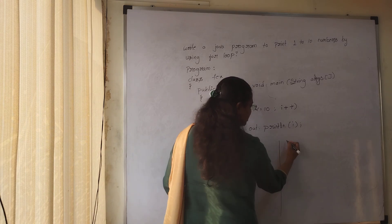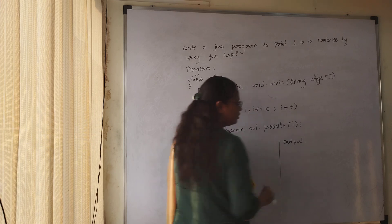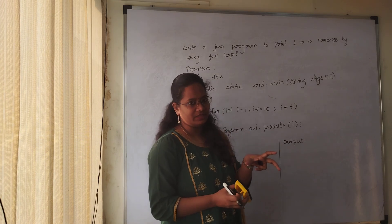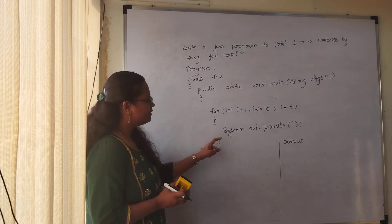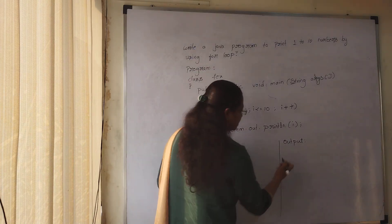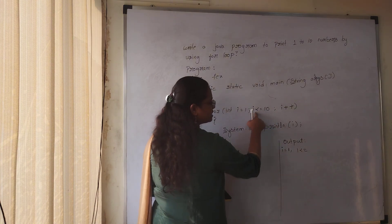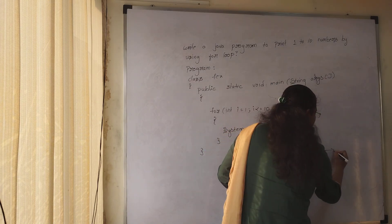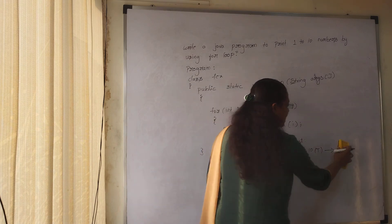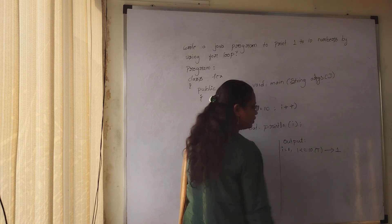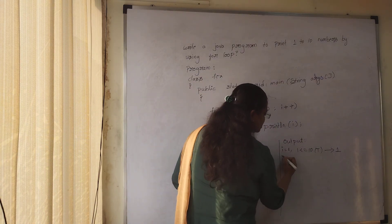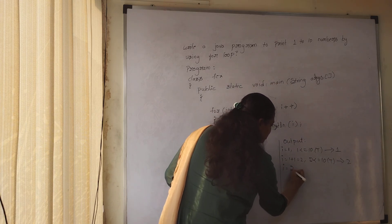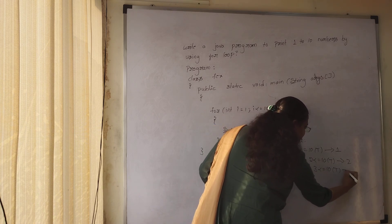Let's trace the output. In while loop, you initialize, check condition, print, then increment. Similarly here: i equals 1, condition 1 <= 10 is satisfied, so it prints 1. Then i increments to 2, condition 2 <= 10 is satisfied, prints 2. Then i becomes 3, condition satisfied, prints 3. This continues until i equals 10: 10 <= 10 is satisfied and it prints 10.